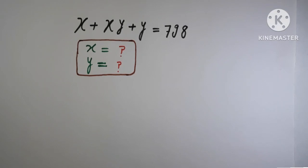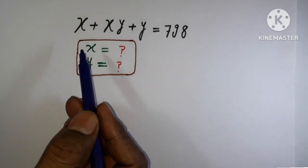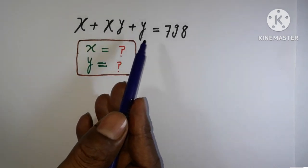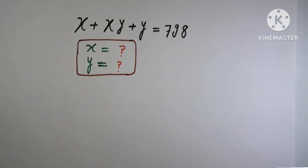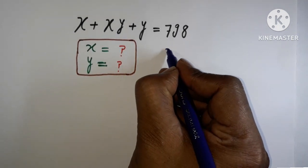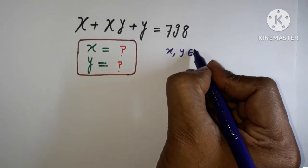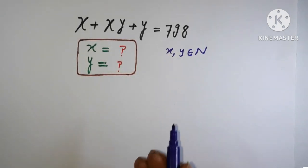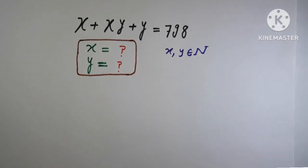Welcome back to Triple X Learning. Today we have to find the value for x and y. The question is: x plus xy plus y equals 798, where x and y should be natural numbers.